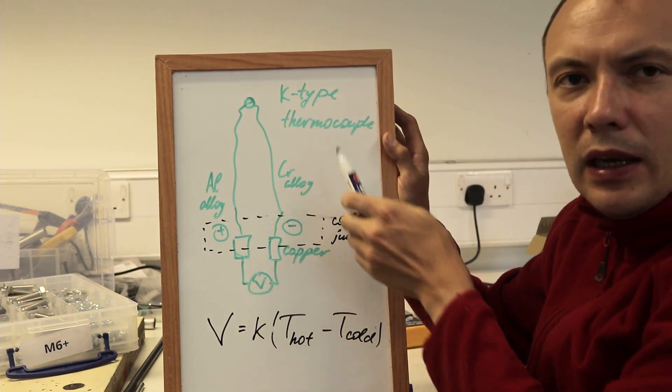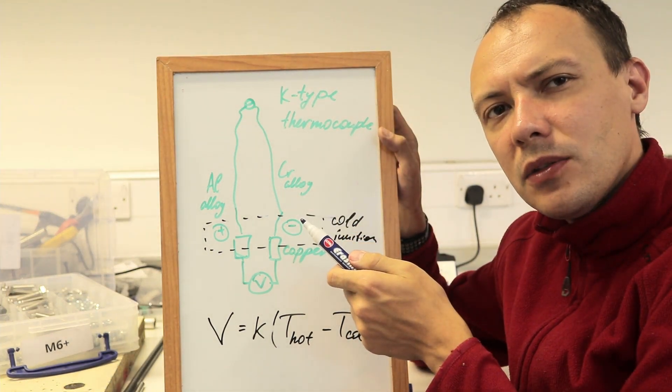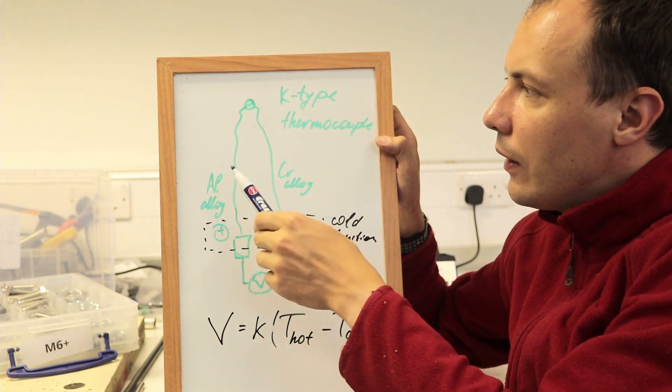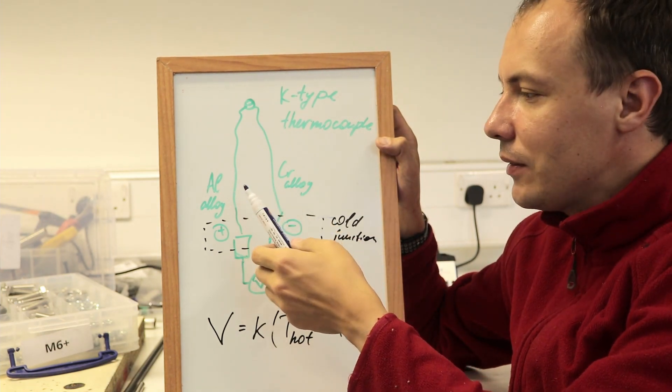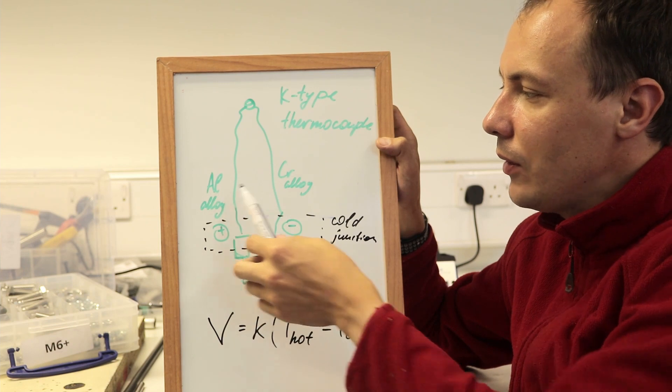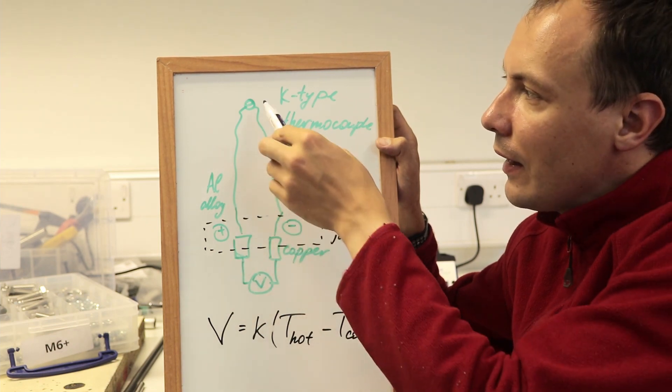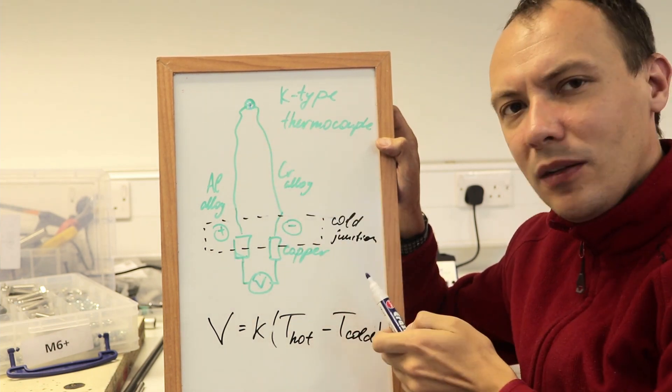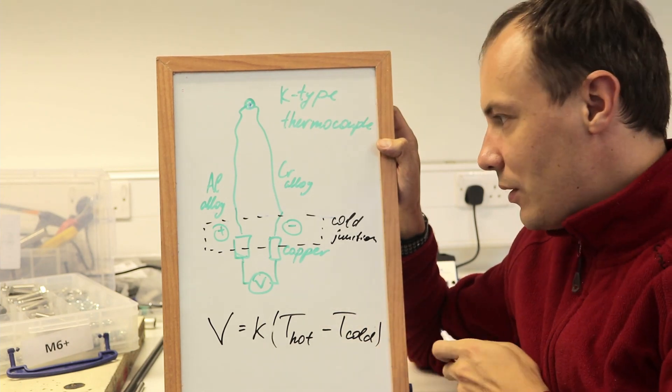What we have? We have K-type thermocouple, possibly the most widely used thermocouples around. They have two dissimilar metals—aluminum alloy and chromium alloy—connected, welded in a single point, the point that is measuring temperature.